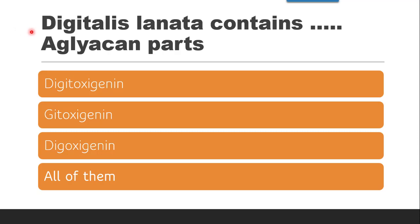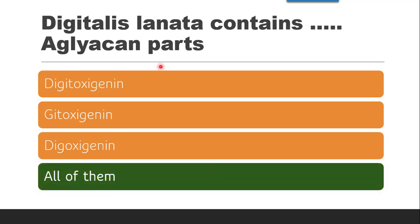The next question is: Digitalis lanata contains how many aglycone parts? Lanata contains three aglycone parts: digitoxigenin, gitoxigenin, and digoxigenin. So the correct answer is all of them. Digitoxin yields digitoxigenin, gitoxin yields gitoxigenin, and digoxin yields digoxigenin.